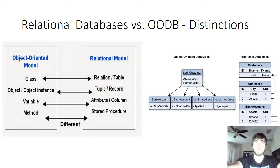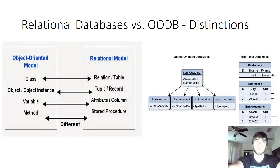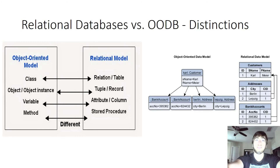Now that we have established performance, let's dive further into the similarities and distinctions between relational and OODBs. To further evaluate the model, a man named Carl Meyer has two bank accounts, one registered in Berlin and the other in Leipzig. In the object-oriented model, the customer class is defined by two variables: first name and last name. It has two child classes — one called bank accounts and one called address — which hold an account number and the city as variables, respectively.